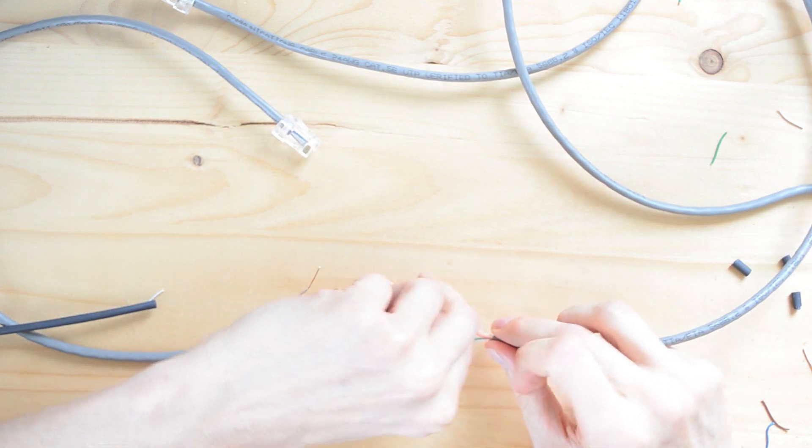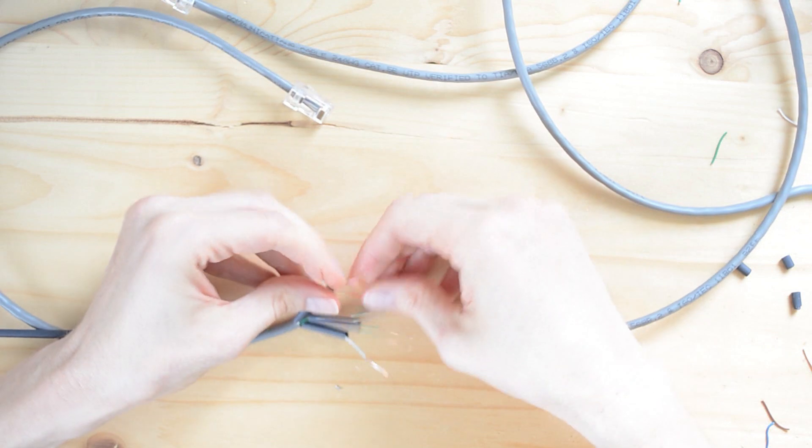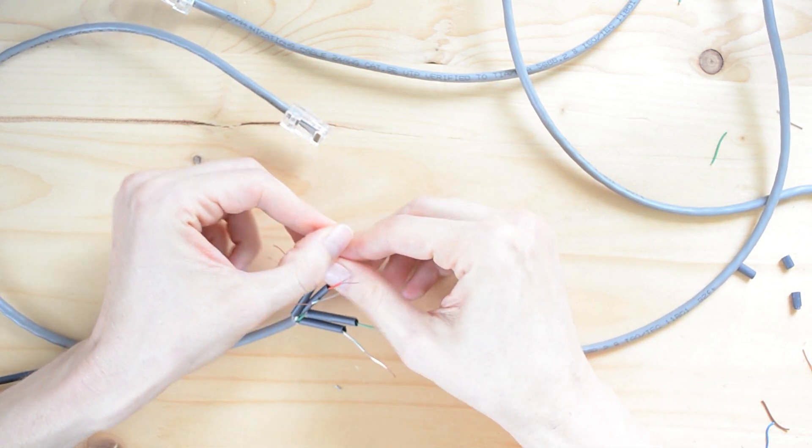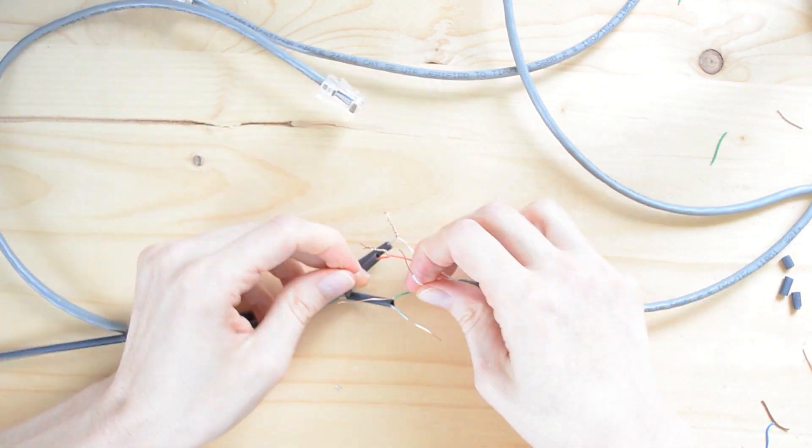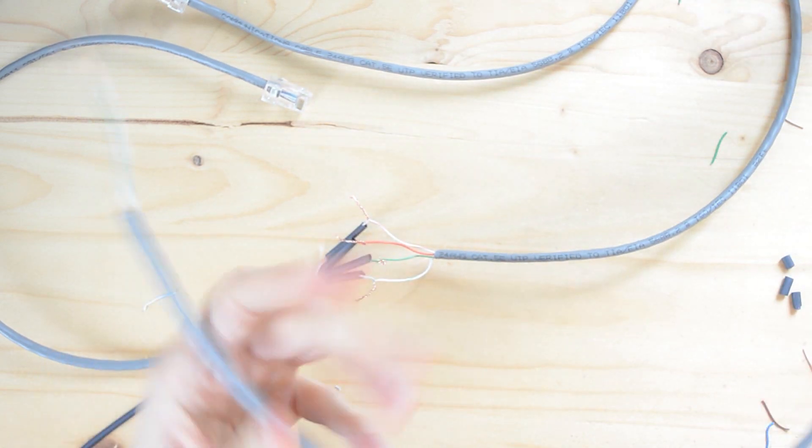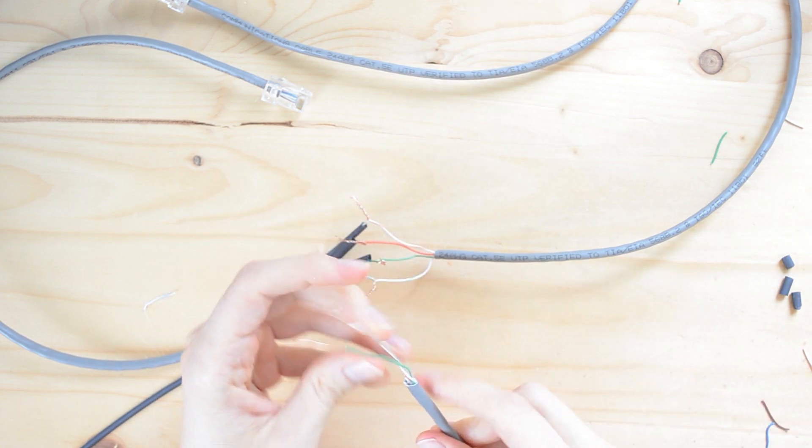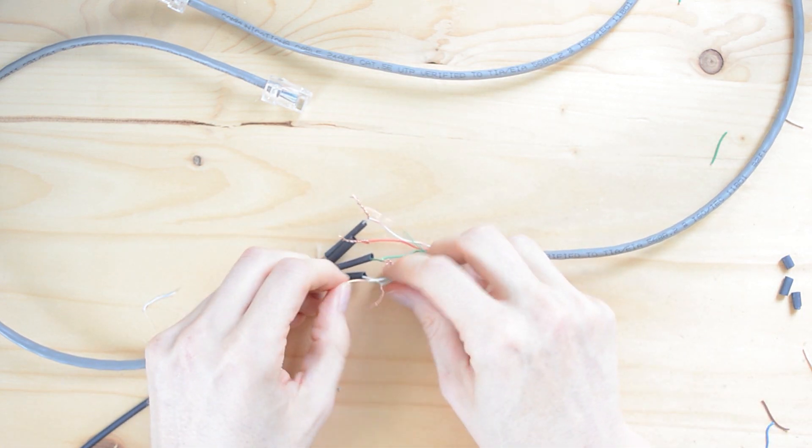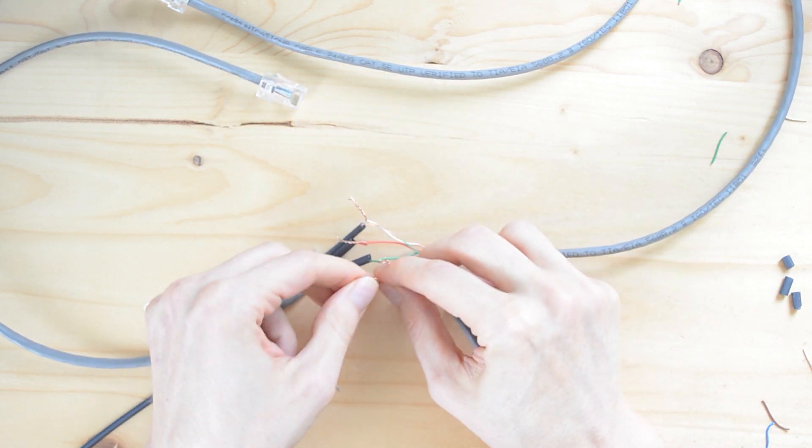So I've got these pieces of heat shrink. I'm going to cut these to size. Go ahead and put them over the conductors before I forget. So the next thing is to take the other side of this Cat5 and rejoin it. So I'm going to take and twist each one of these pairs back together.